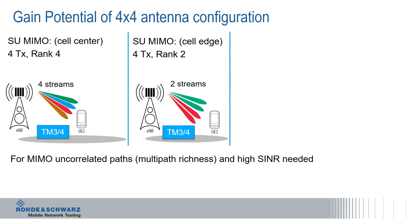If we are moving with the UE further out, we can use 4 transmit rank 2. That means we are using two streams now. We only see two colors — green and red — two streams. These two streams are transmitted by two antennas each.